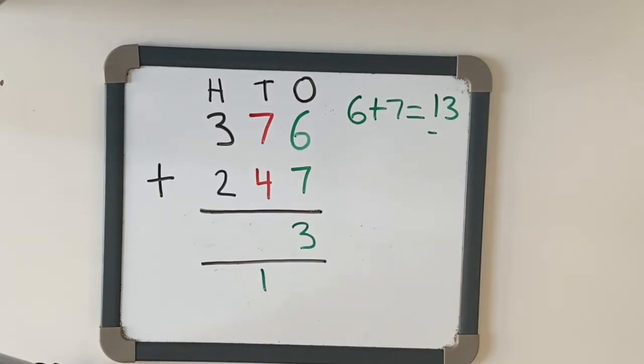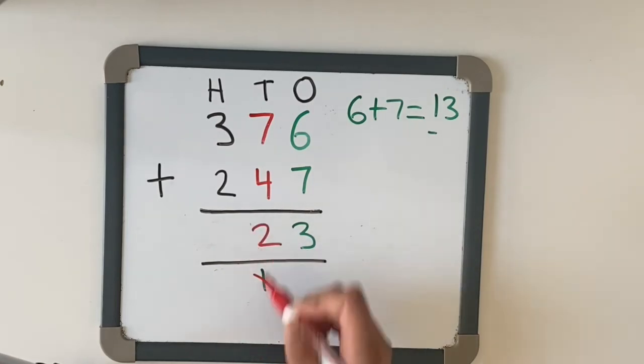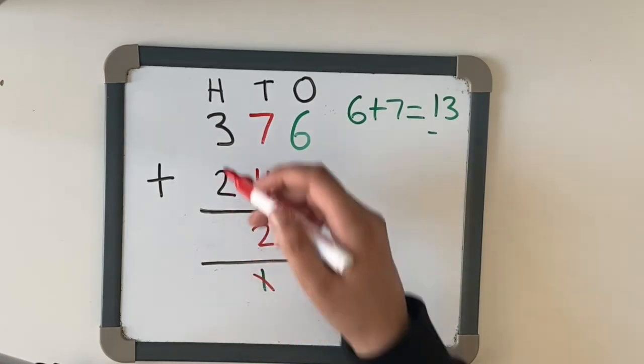Now we're going to add our tens column together. We're going to do seven tens, add four tens, add one ten which is twelve tens. I'm going to cross that out. I'm going to put the two in there and carry the hundreds under the hundreds column.